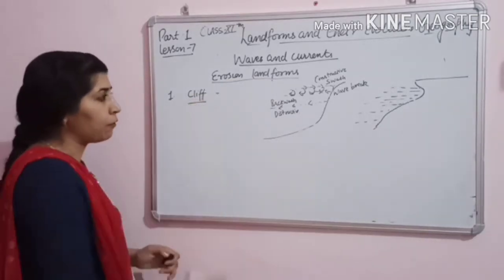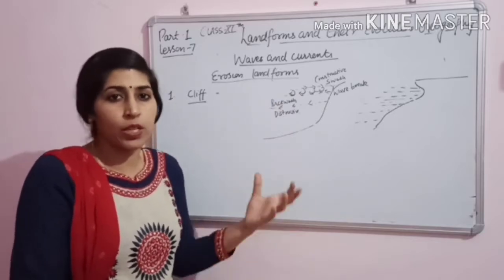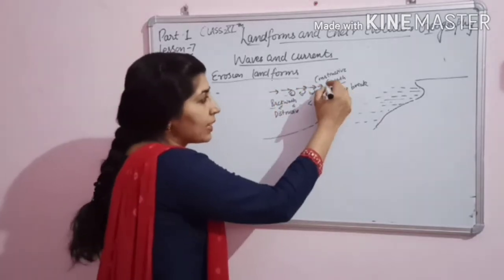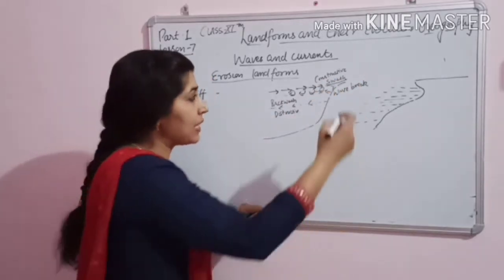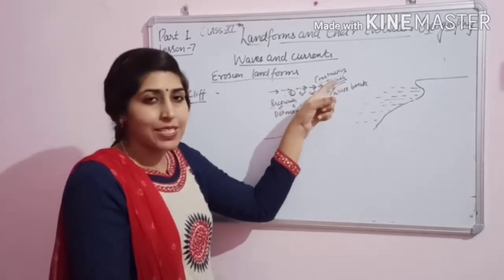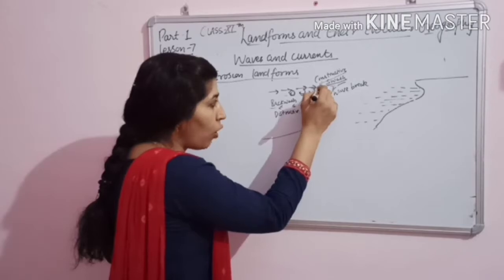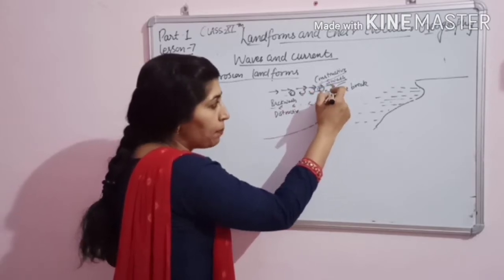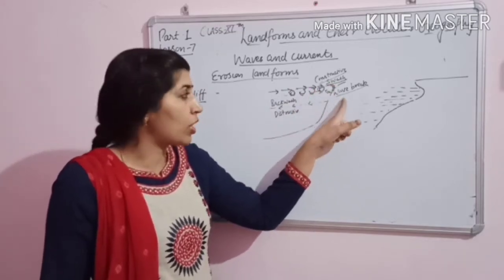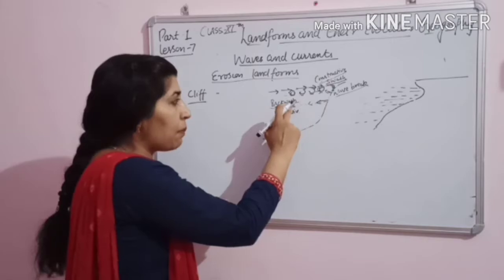Erosional landforms — first of all, cliff. Before reading about the cliff, the movement of waves is very necessary to understand. When waves move toward the coast, it is called swash. When the wave breaks at the coast, sediment is deposited. When waves move back away from the coast, that is called backwash. So we have swash and backwash, and this is a destructive cycle.